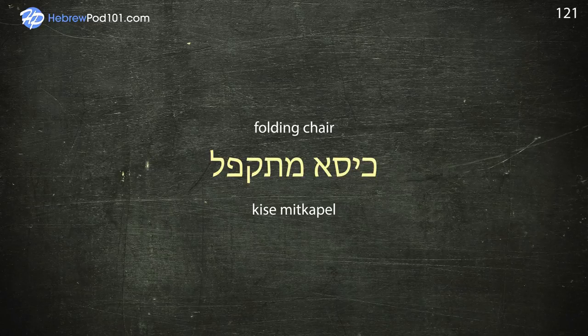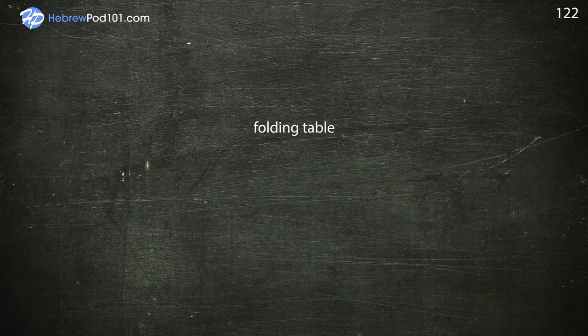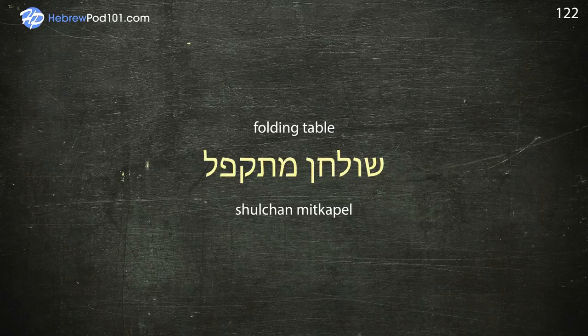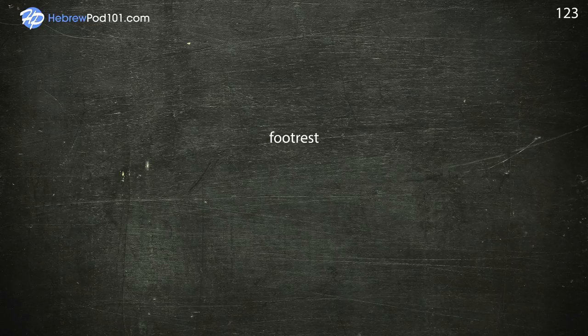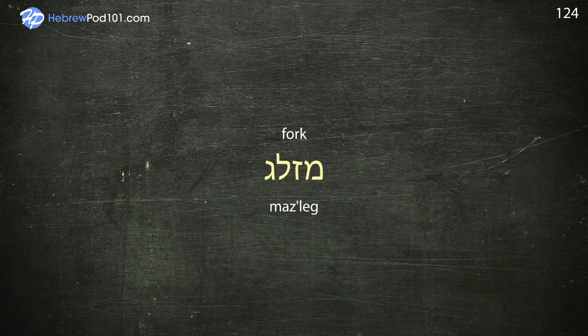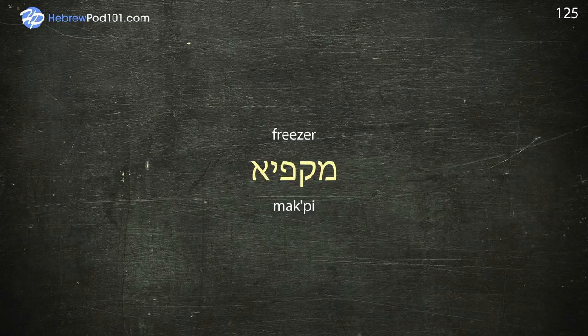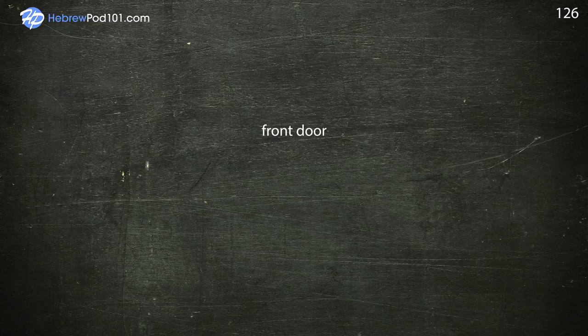Folding table — Shulchan Mitkapel. Footrest — Hadom. Fork — Mazleg. Freezer — Mekpi. Front door — Delet Kidmit.